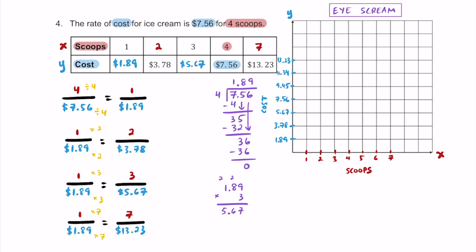Label your x-axis for scoops going by 1, and label your y-axis for cost going by $1.89 per square. Plot the ordered pairs: (1, $1.89), (2, $3.78), (3, $5.67), (4, $7.56), and (7, $13.23). Connecting all these points and drawing an arrow gives a linear graph representing this ratio. These four problems show how to take an original ratio or rate, fill in a data table with ordered pairs, plot them on the coordinate plane, and show the linear relationship. Ratios should always go through the origin.